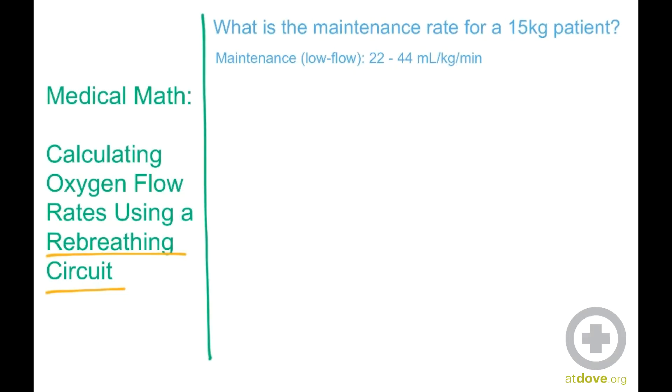So now we're going to do the medical math to calculate oxygen flow rates using a rebreathing circuit, but we're going to talk about the maintenance rate. And so when we talk about maintenance rate, we're basically saying what is the lowest flow rate that we can use to deliver our anesthetic while still thinking about things like patient temperature and clinic costs. So if they're doing really well under anesthesia, we can actually get our oxygen flow rates down lower than they were in the induction phase.